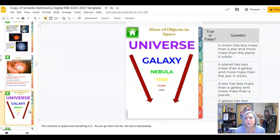On slide 21, we're comparing relative size of objects in space. From the largest to the smallest, we have the universe. Smaller than the universe is a galaxy. Within a galaxy are nebula. Smaller than a nebula is a star. Smaller than a star is a planet. And smaller than a planet is a moon.